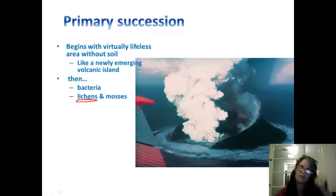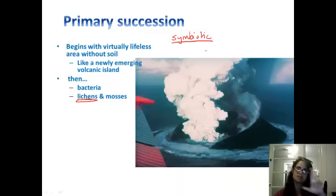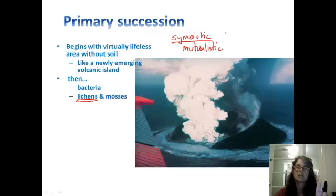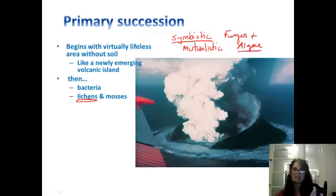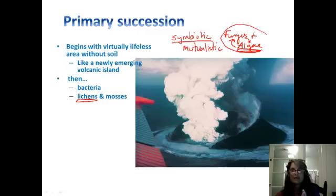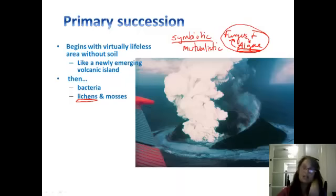You want to remember what lichens are because they come up over and over again in the course. Lichens are an example of a symbiotic relationship, meaning symbiosis is when two organisms live in very close association. In this case, it is a mutualistic symbiotic relationship in which a fungus and an algae are living in very close association. The algae, being photosynthetic, lives in the tissues of the fungus and does photosynthesis, providing the fungus with food. And the fungus provides the algae with a nice place to live. Together, this symbiotic relationship is very self-sufficient and hardy and can be one of the first colonizers of a barren rock like our volcanic island.